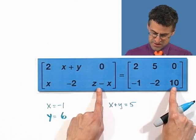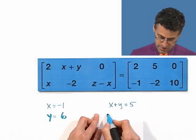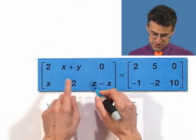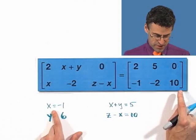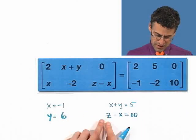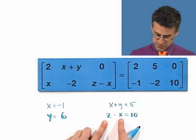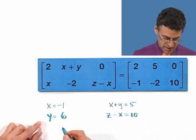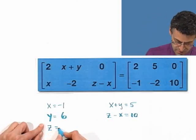And then what about these things? These corresponding terms have to be equal. So Z minus X needs to equal 10 for these two matrices to be equal. Well, I know that X actually equals negative 1, so this is Z minus negative 1, or Z plus 1 equals 10. If I subtract 1 from both sides, I say Z equals 9.